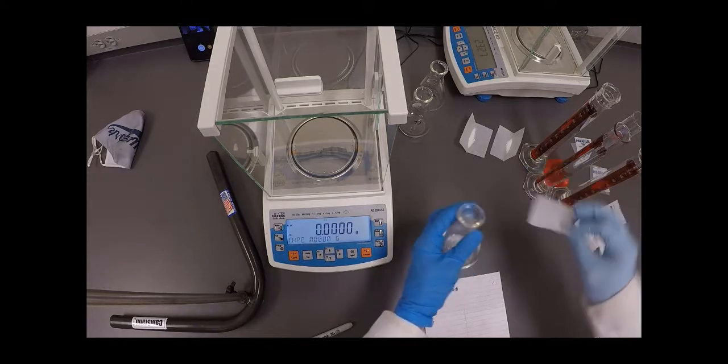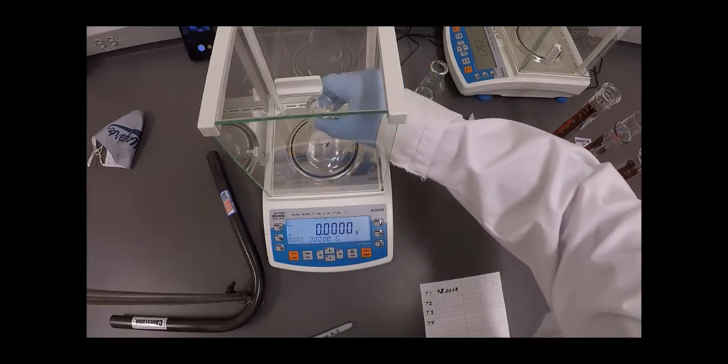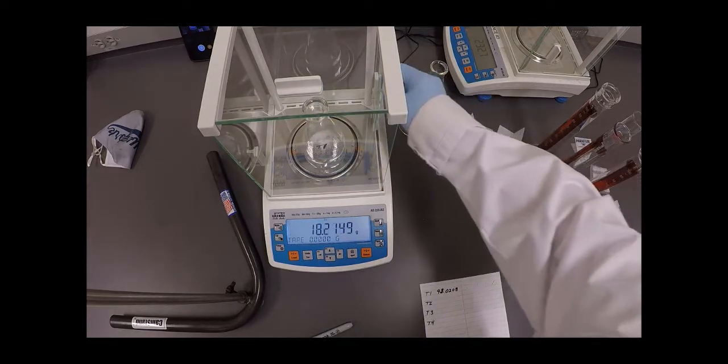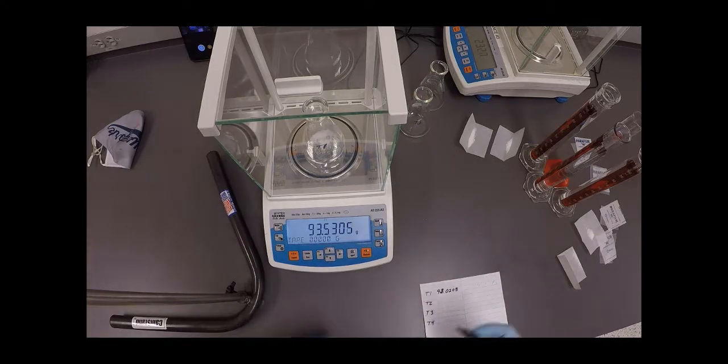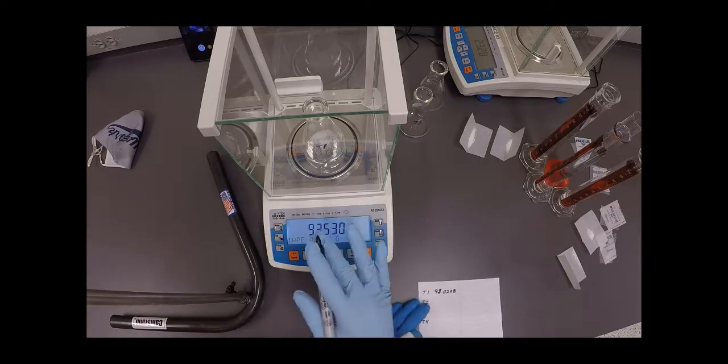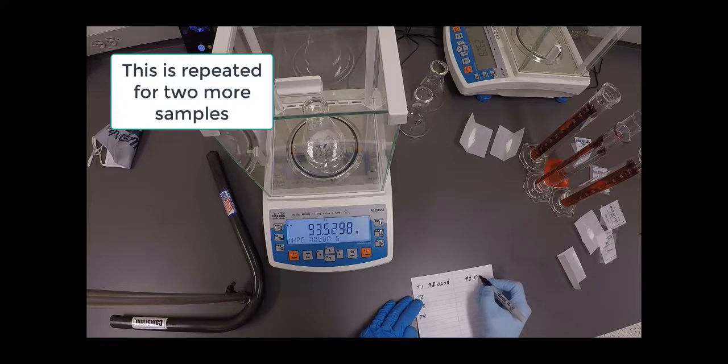And now I'm going to add approximately a half a gram of KHP to this. So again, this will give me my gross mass, and you'll get to take the difference between what I read here and the empty mass of the Erlenmeyer to get my mass of KHP. So the gross mass of the KHP plus the Erlenmeyer is 93.5298.